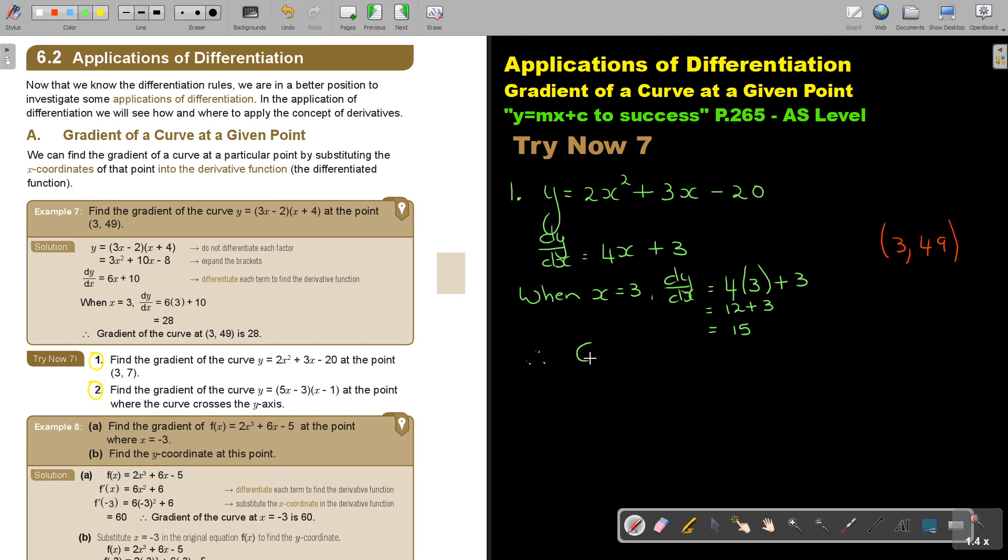And I can end by saying, therefore, gradient of the curve at a point. What is my point? 3 and 49 is 15. The gradient of the curve at that point is 15. Let's do the next one. Number 2.